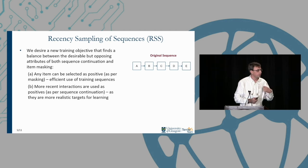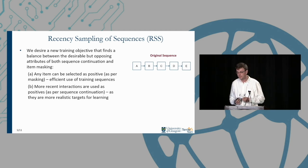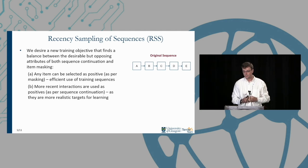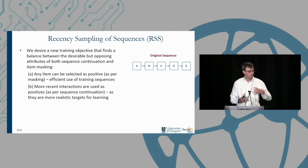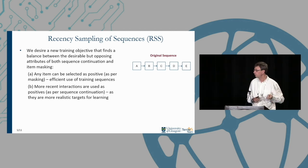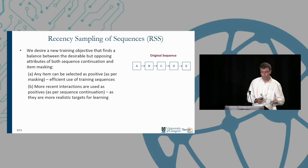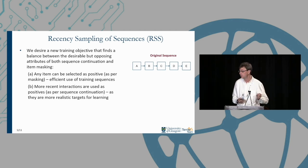To address this challenge, we wanted to find a new training objective combining the desirable attributes of both existing objectives. The two desirable attributes are: any item can be selected as a positive (as in item masking), making efficient use of training sequences; and more recent interactions are used as positives more often (as in sequence continuation), making more realistic targets and hopefully enabling faster convergence.